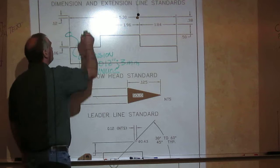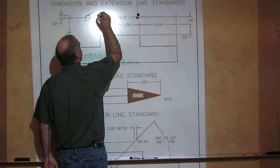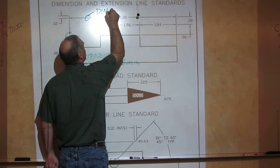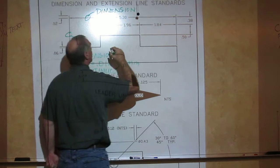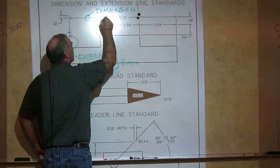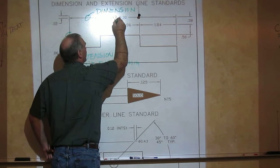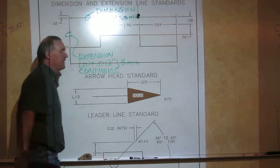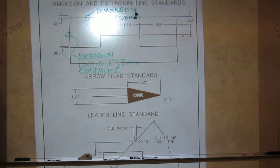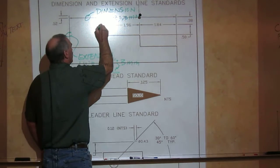Now we have one other line. This guy right here. This is called a dimension line. Its line weight is equal to .012 or .3 millimeter. Same as the extension line. So therefore, you can use the same layer. The dim layer.